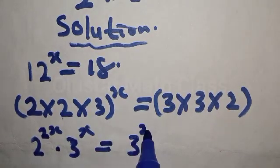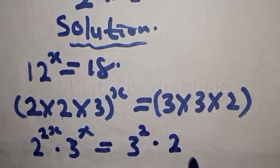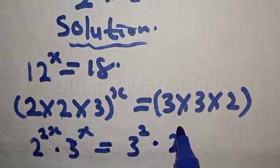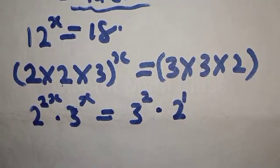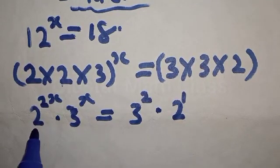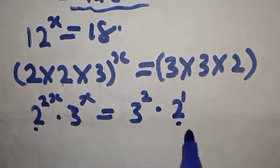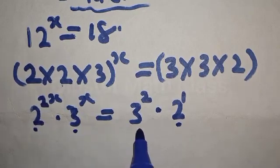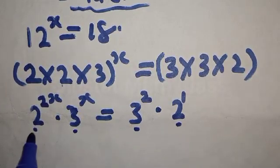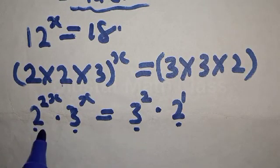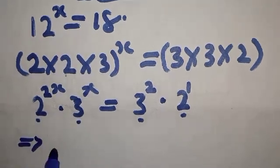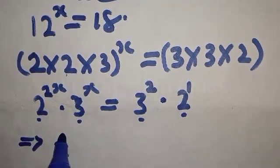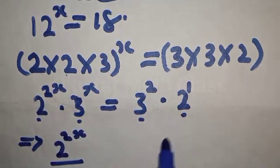On the right side this equals 3 squared dot 2, which is also 2 raised to power 1. This one has the same base as this, and we have 2 raised to power x as the same base as this, so let's divide. This implies that we have 2 raised to power 2x divided by 2 raised to power x.